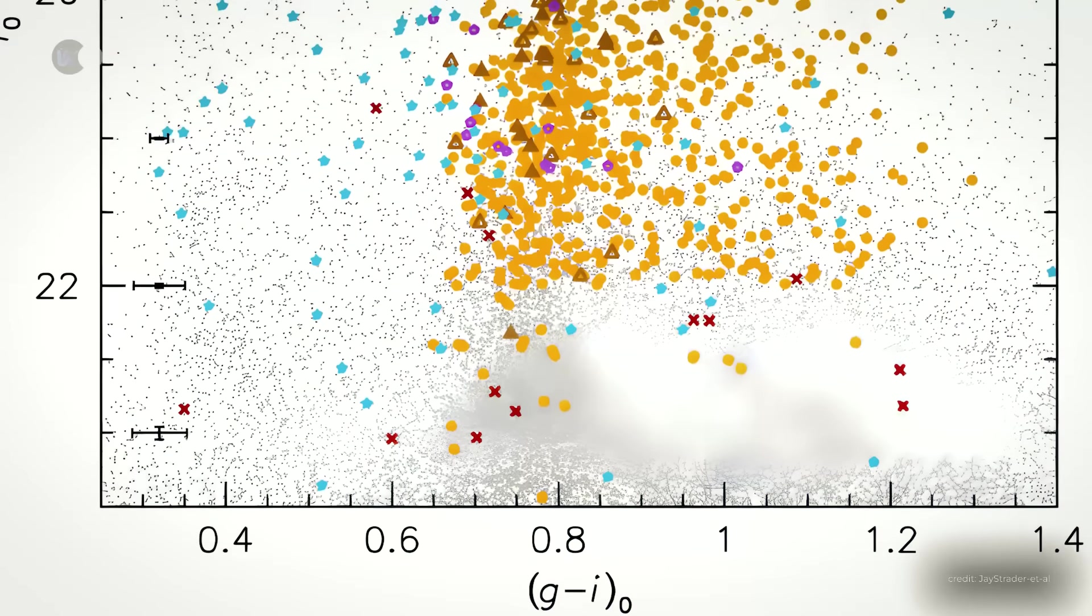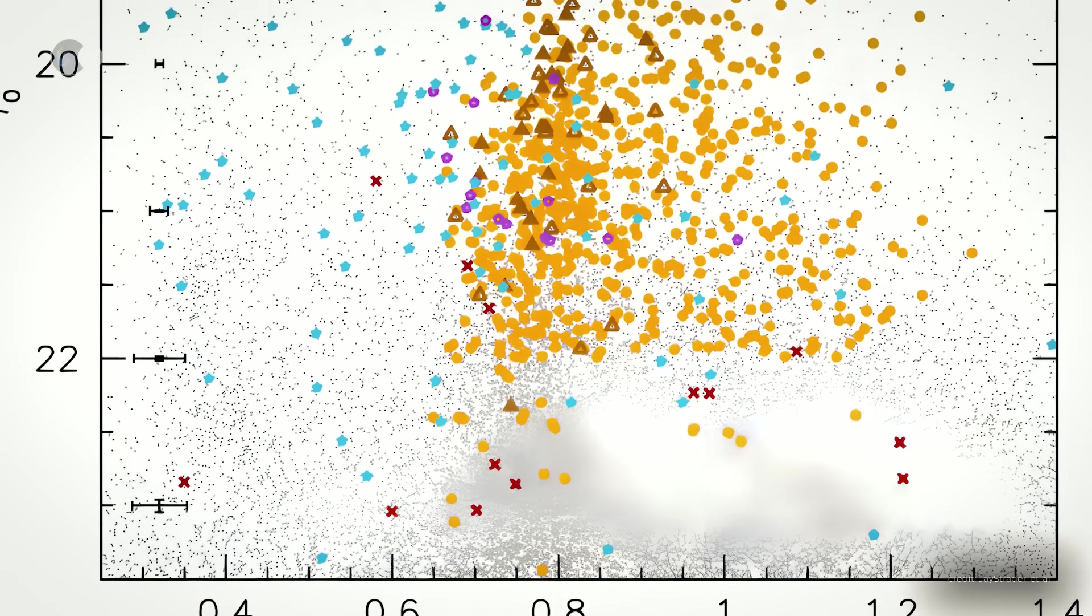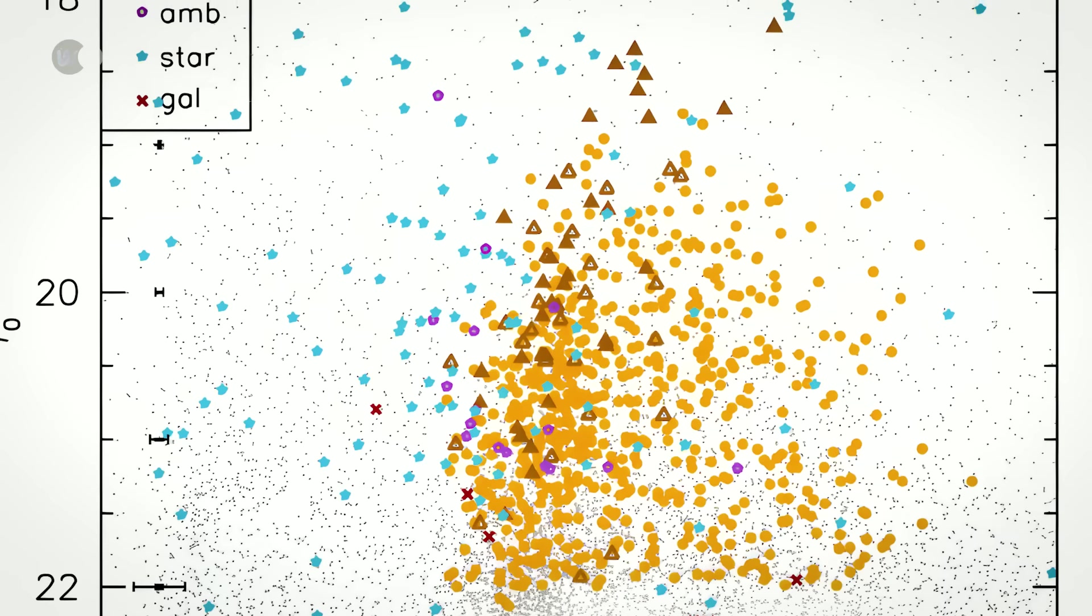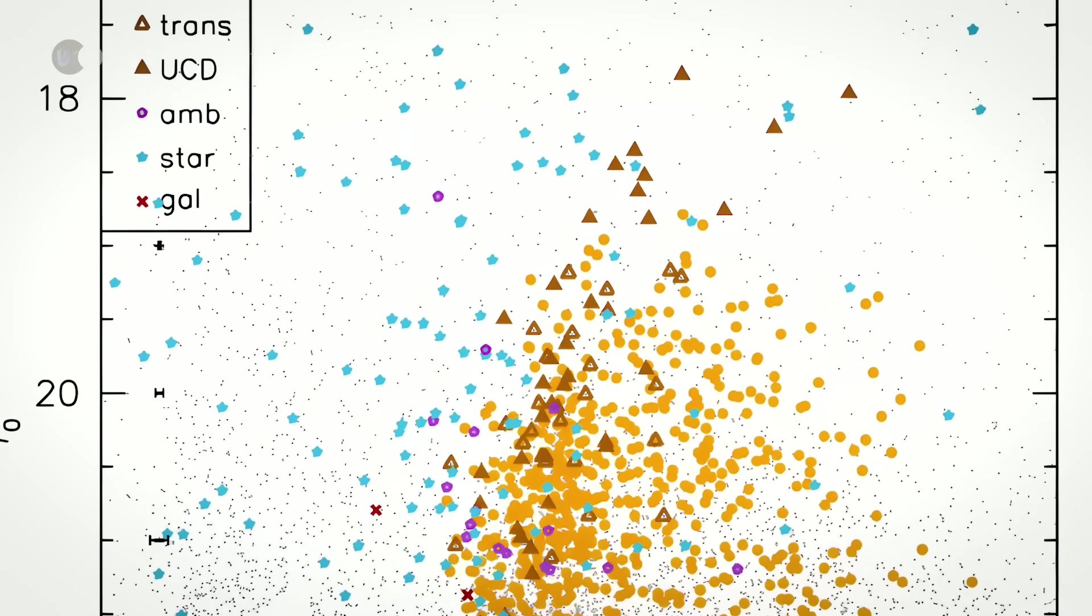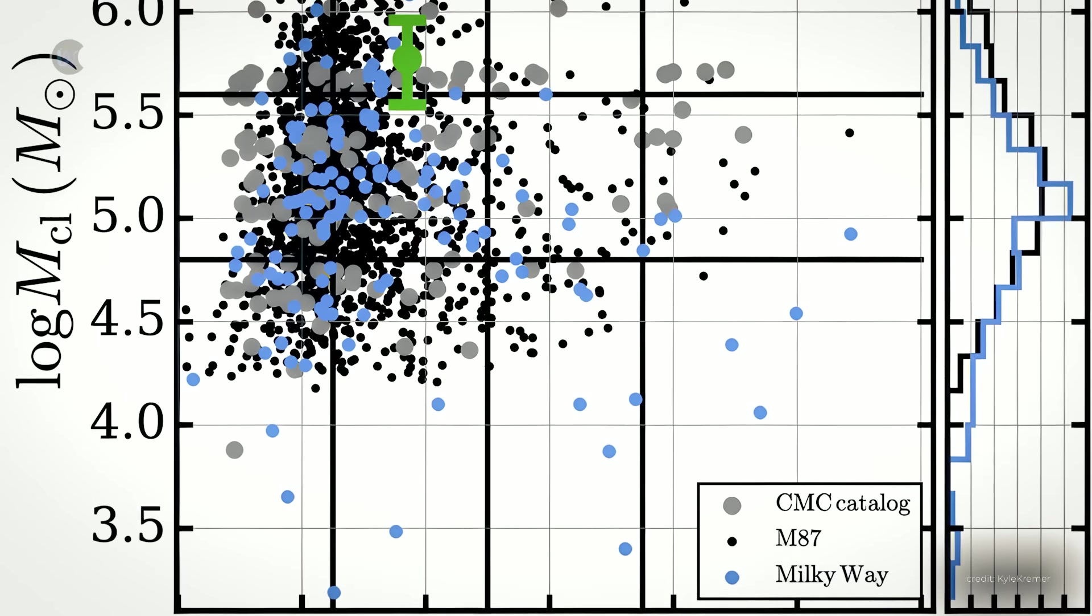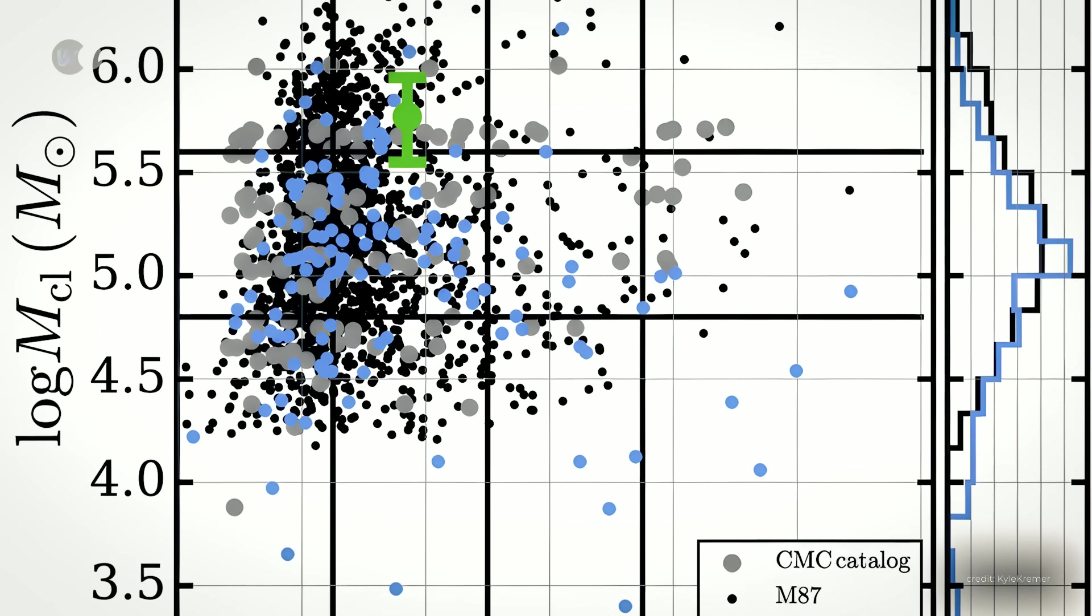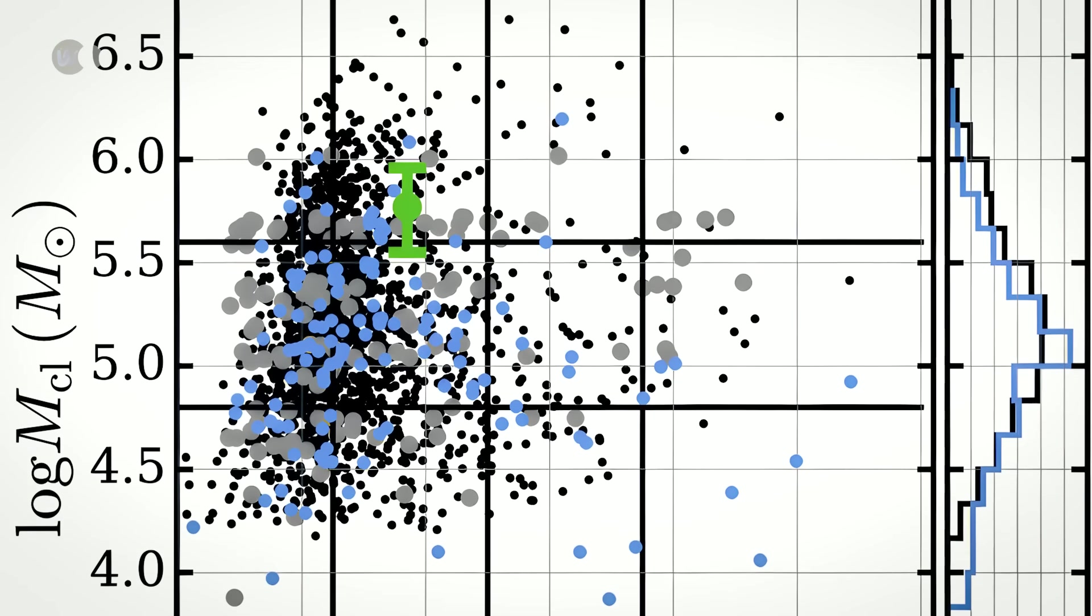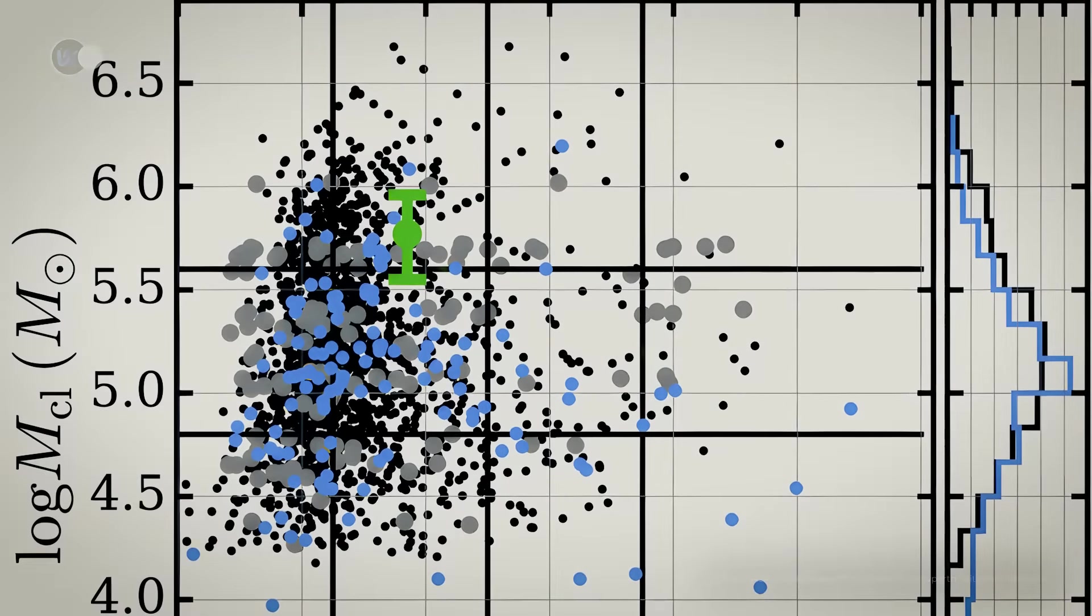The galaxy has a high population of globular clusters. Indeed, one study estimated the number to be around 12,000, while the Milky Way only counts between 150 and 200. These clusters get larger the further away you are from the galaxy's center.